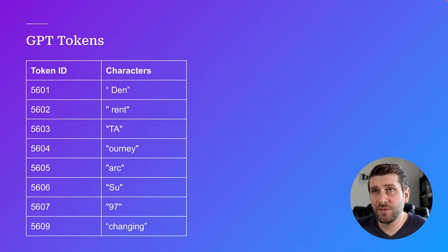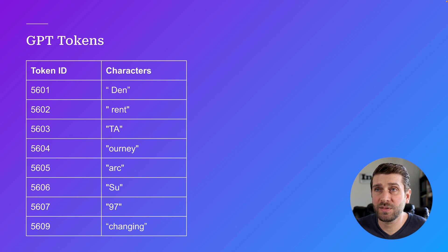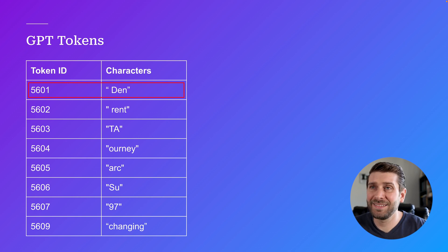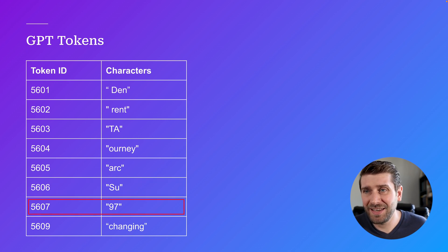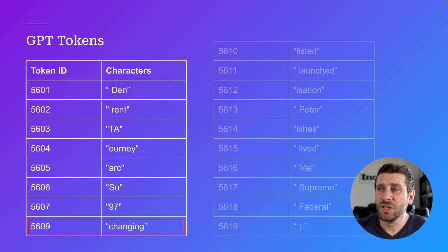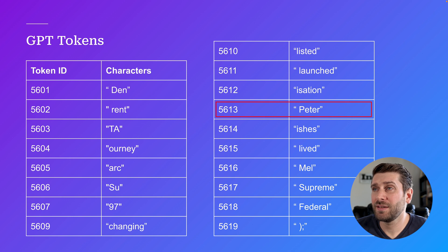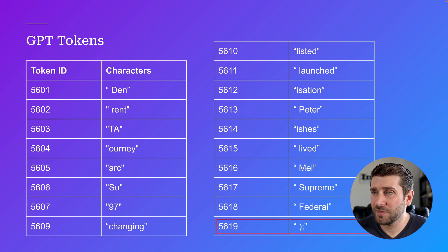Here's an excerpt from the GPT vocabulary. You have a number in one column — that's the token ID — and then you have the characters it represents. Pay attention where there's a space. So the first one is 'space DEN' with a capital D — I live in Denver, that's my token! Then 5602 is 'rent' with a space in front of it. We have capital TA, what looks like the end of the word 'journey' without the J, ARC, capital S, lowercase u, the number 97, and 'changing.' Then 5613 is the name 'Peter' with a space in front of it. And 5619 is a right parenthesis with a space in front of it and a semicolon behind it.